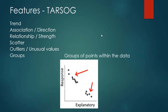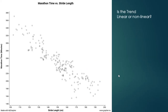The last feature is groups. Groups generally show a characteristic or category within the data — for example, males and females — meaning values are different within the data. It doesn't necessarily need to be two separate clusters; it may be one line and then another line above it. It just means there might be more than one relationship within the data.